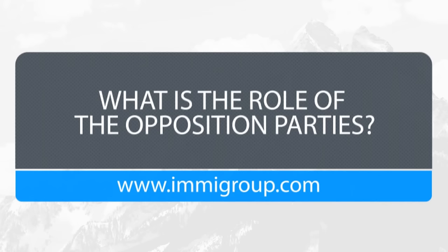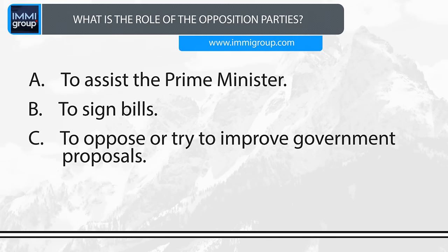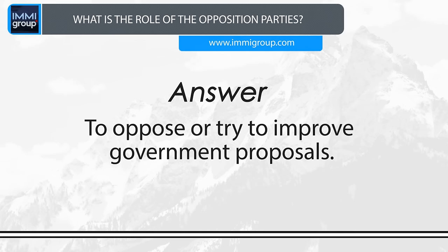What is the role of the opposition parties? A. To assist the Prime Minister. B. To sign bills. C. To oppose or try to improve government proposals. D. To put forward bills to be passed. Answer: To oppose or try to improve government proposals.